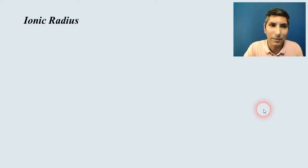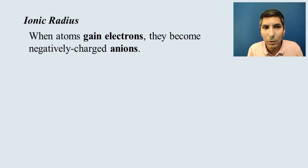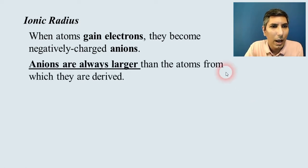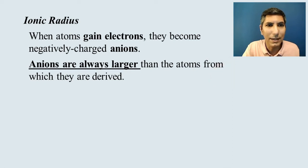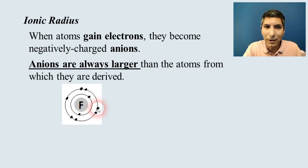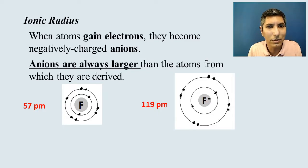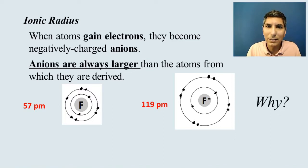Now let's look at ionic radius. When atoms gain electrons, they gain a negative charge and become anions. When atoms go through that process, they become larger. Anions are always larger than the atoms from which they are derived. For example, if we take fluorine and add another electron to form F⁻, notice how the ionic radius almost doubles. We only added one electron — so why is the radius so much larger?